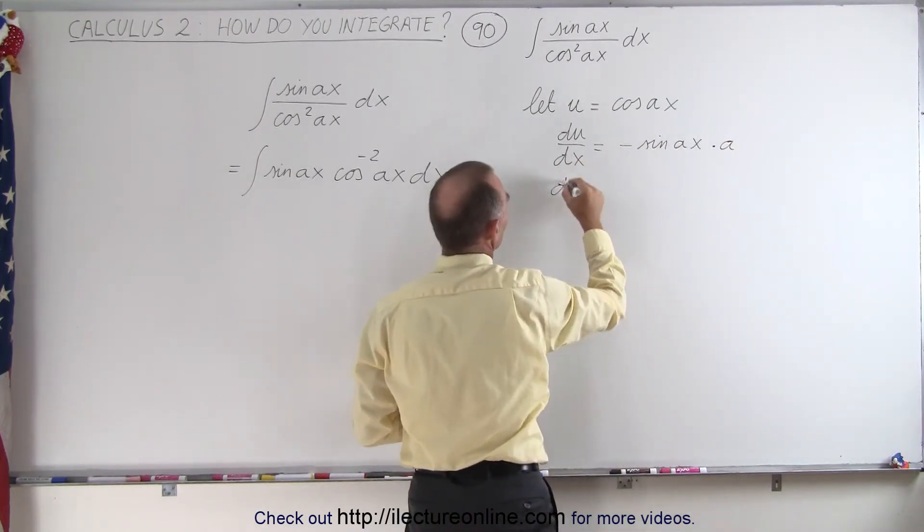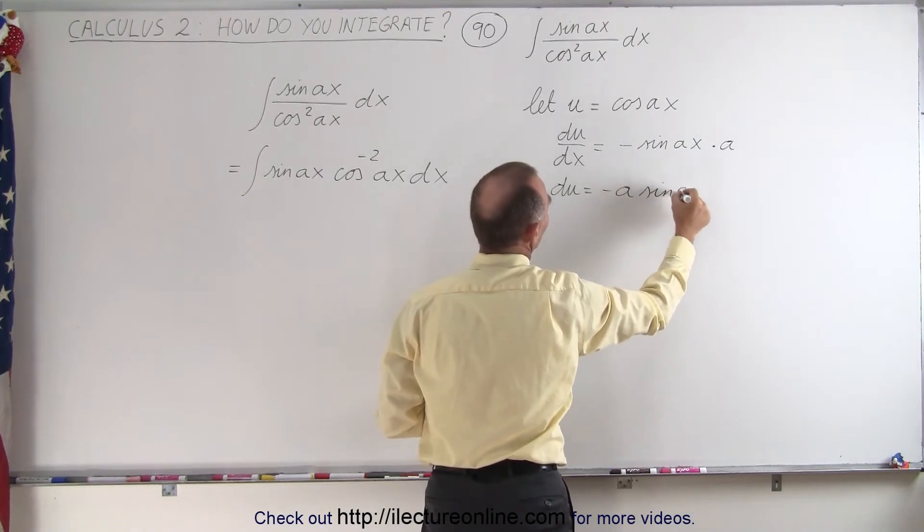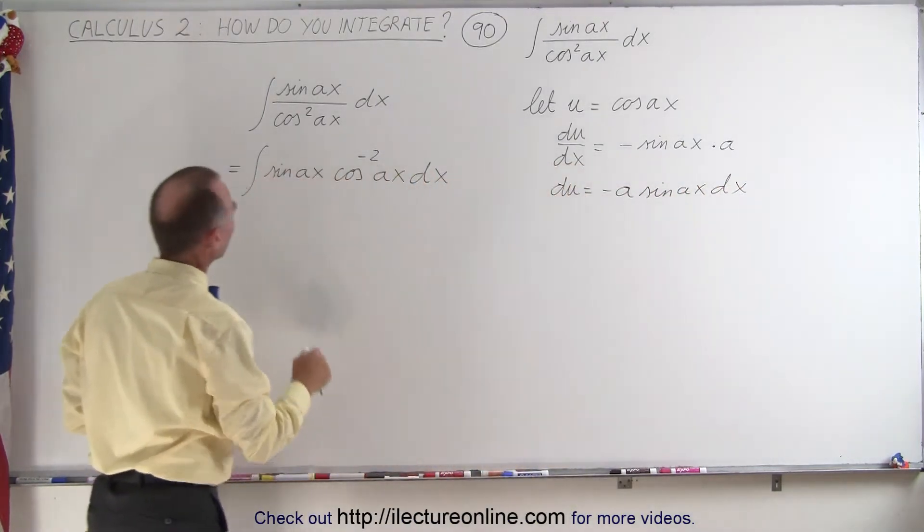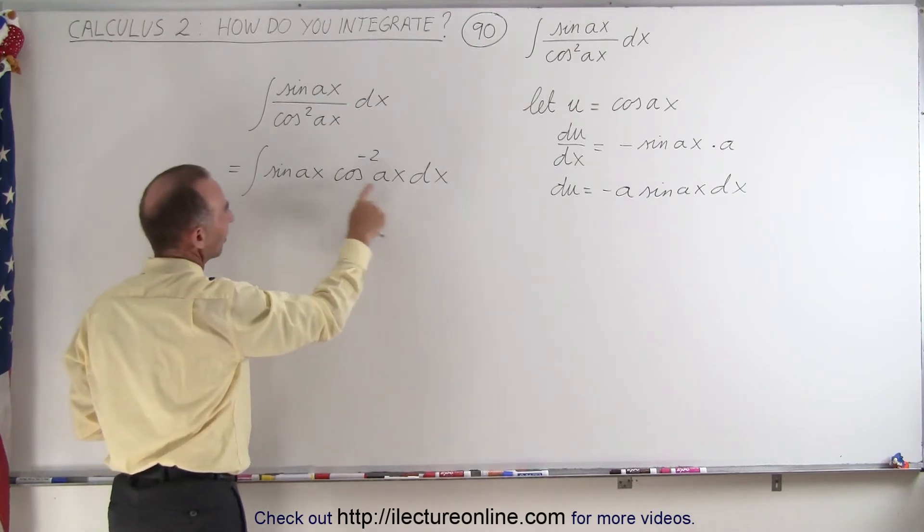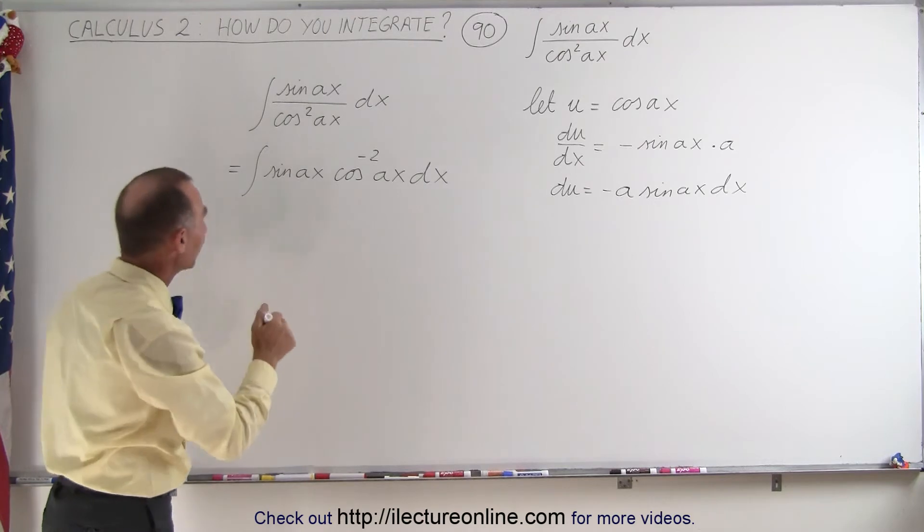Which means that this can be written as du is equal to minus a times the sine of Ax times dx. And then you look over here and realize that we have a sine of Ax times the dx, we just don't have the negative a. So we're going to rearrange this a little bit.